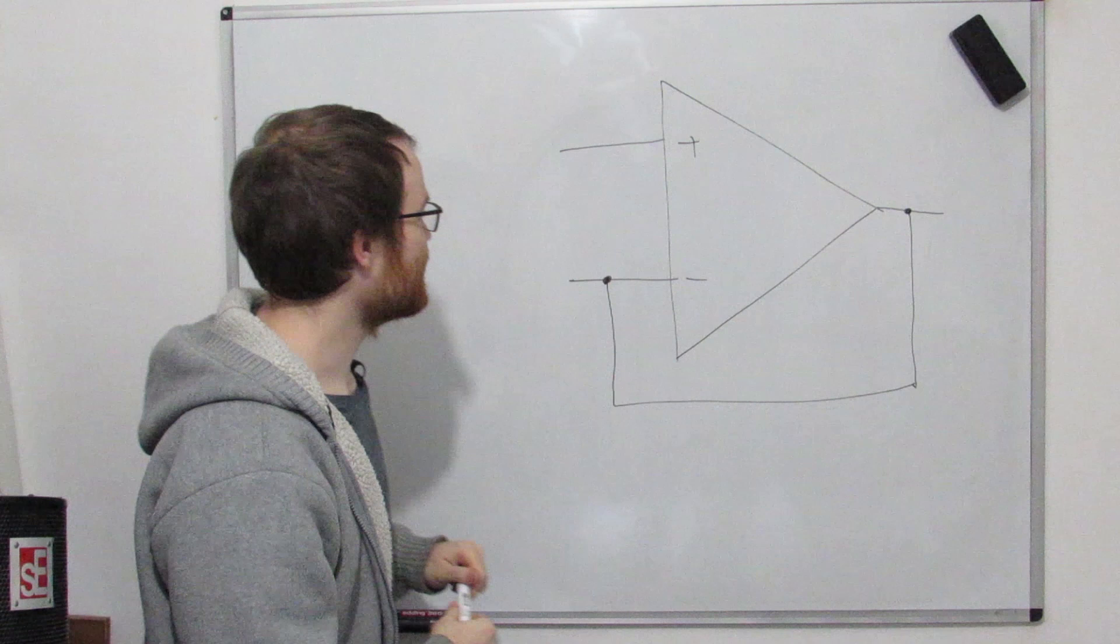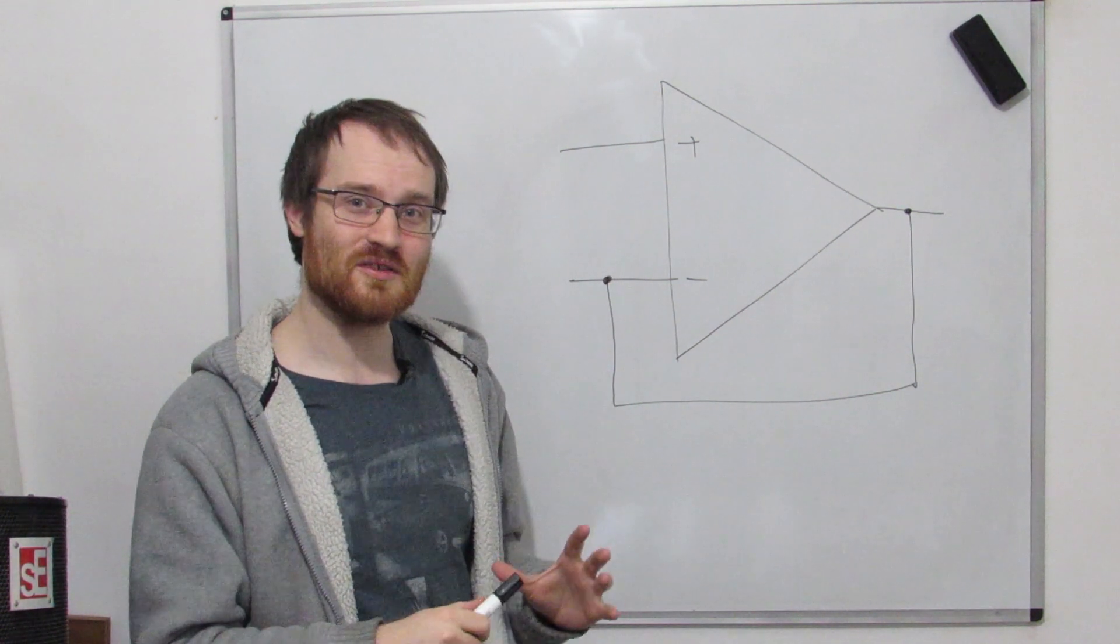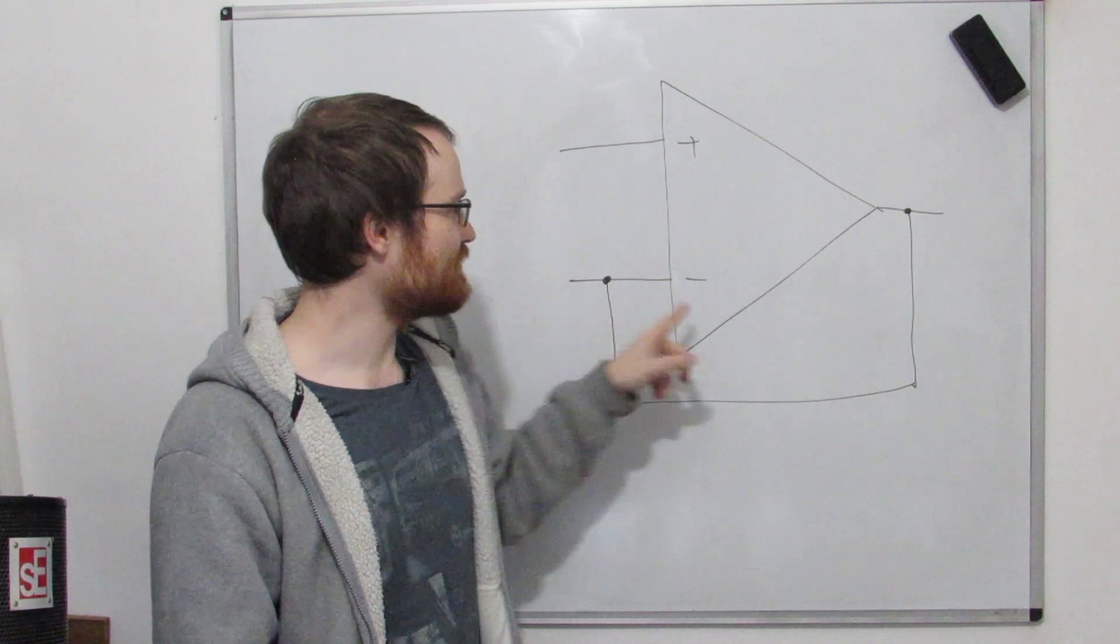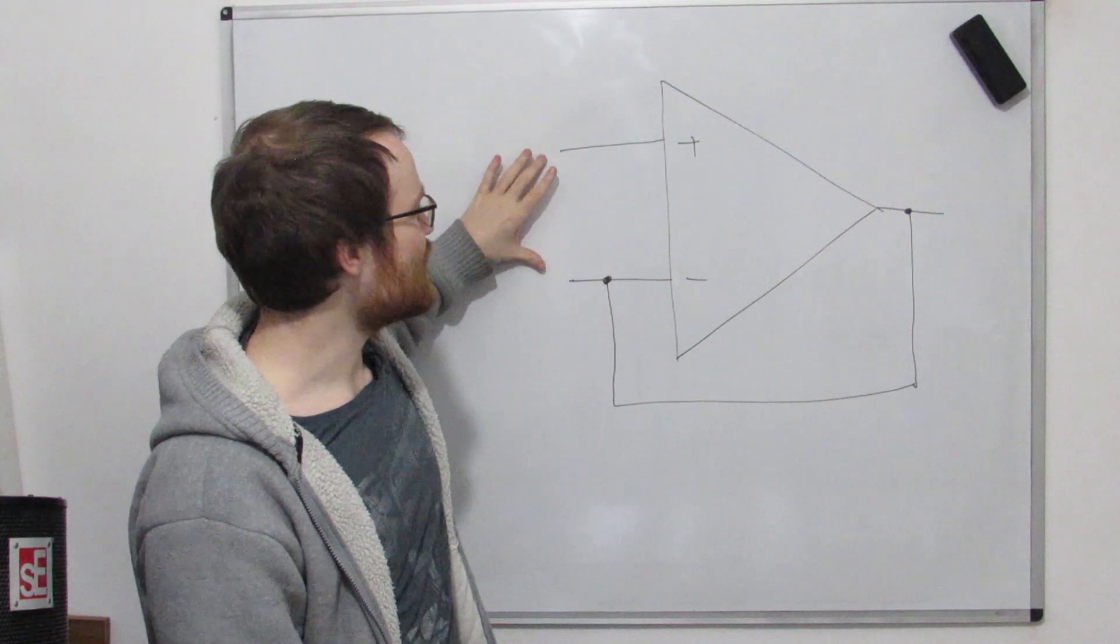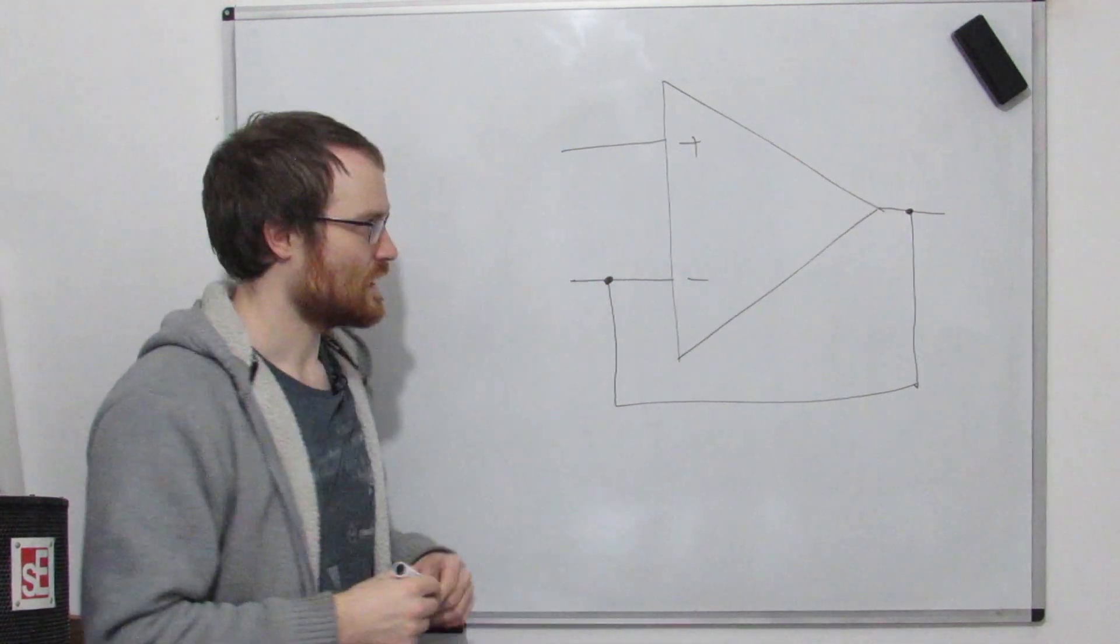Okay, so this is called a follower, and the really important thing about this, that's the number one rule that you need to remember: when we have negative feedback, which is when the output is connected back to the inverting input, the op-amp will then do whatever it can to try and make these two inputs equal.